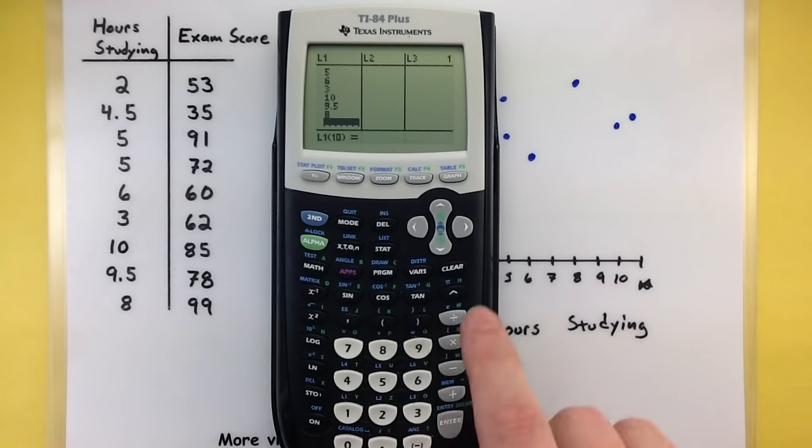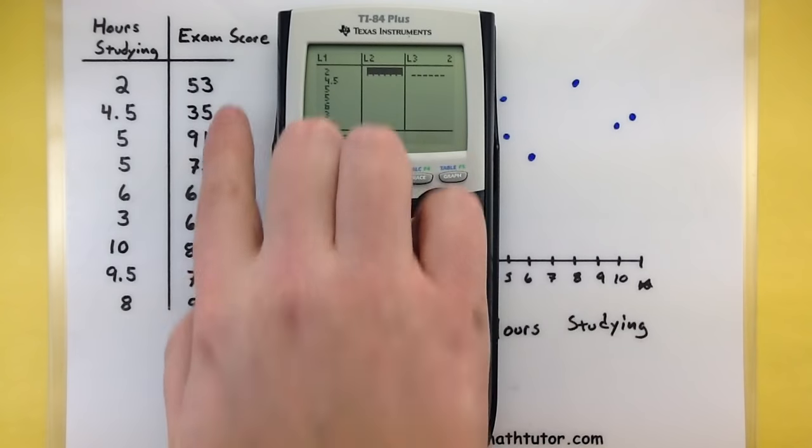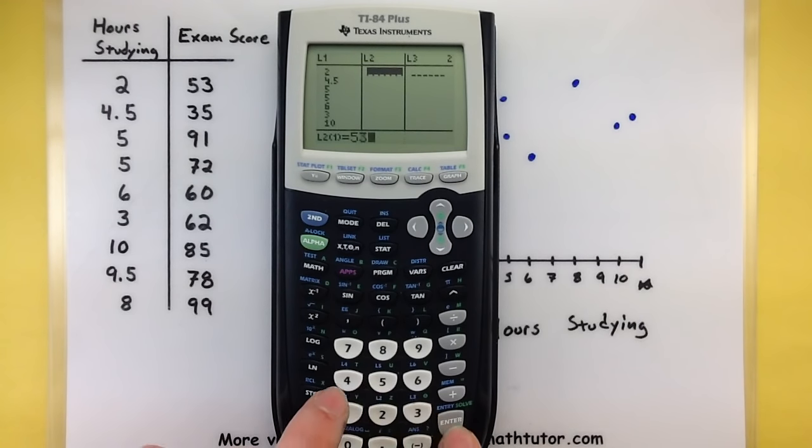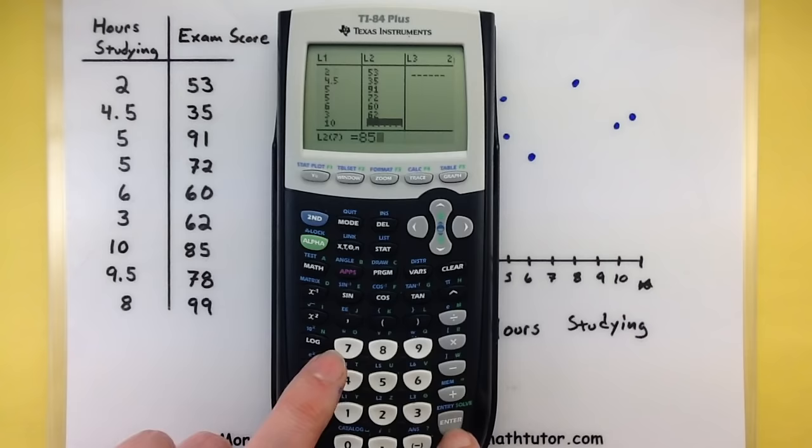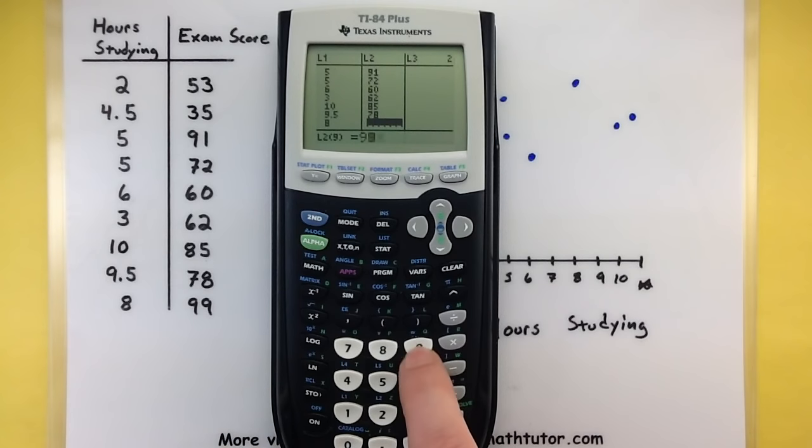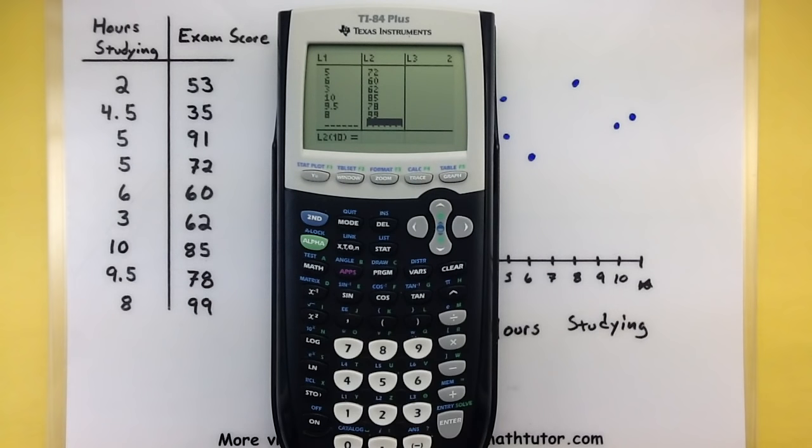There's all of our data points for our study. Press the right arrow button. Let's do all of our exam scores. So, 53, 35, 91, 72, 60, 62, 85, 78, 99. It's looking pretty good. Notice how both the lists are matching up, so I didn't forget any of my data points here. It's looking pretty good.